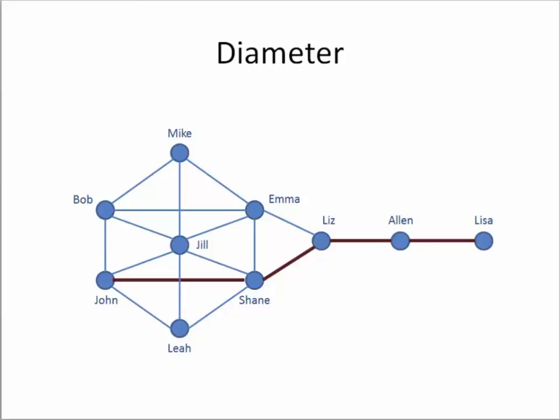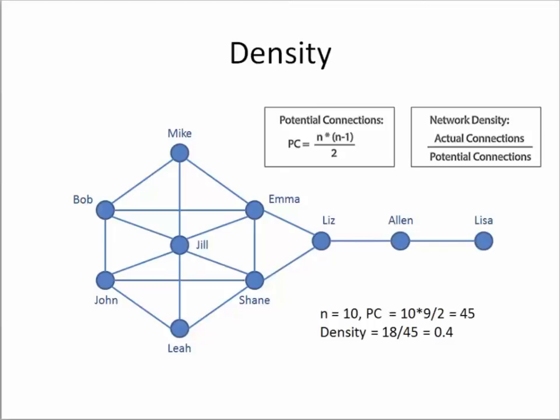This might be potentially a problem for an organization, given that there are some so distantly connected nodes. On the other hand, we can have a measure which is called density. Density determines the potential of the entire network to communicate with each other — that is to say, out of all possible connections between all nodes in the network, how many actually are happening. In this case, we can see that about 40% of the network potential is connected, meaning density is 0.4.